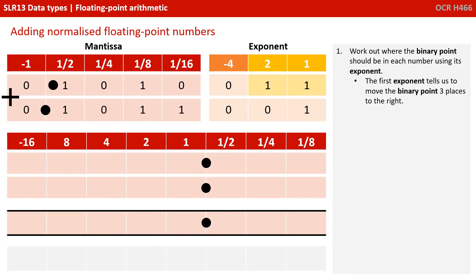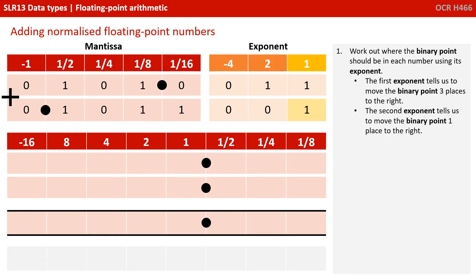Let's work out where the binary point should be in each number using the exponent — that's the first step. The first exponent tells us to move the binary point three places to the right: a one in the two column, a one in the one column, two plus one is three. Remember, positive exponents move the binary point to the right. The second exponent tells us to move the binary point one place to the right. So we've done step one.